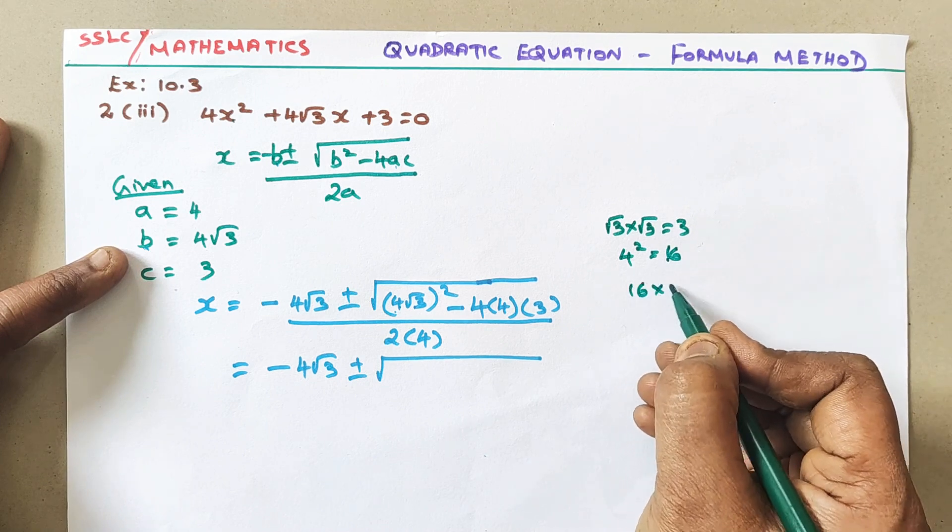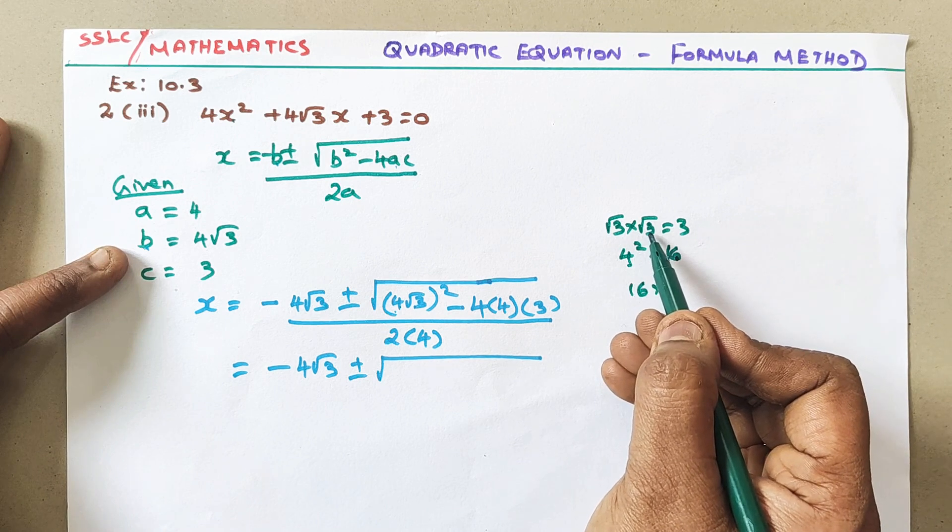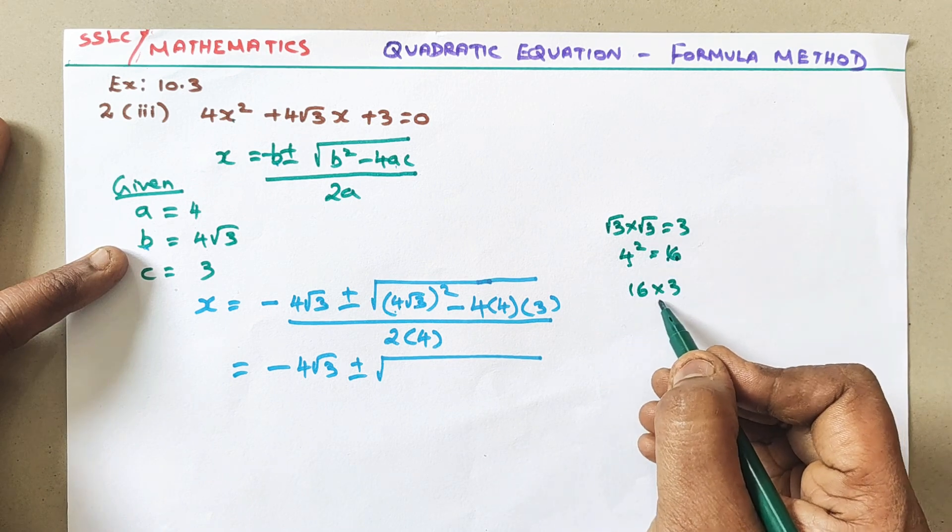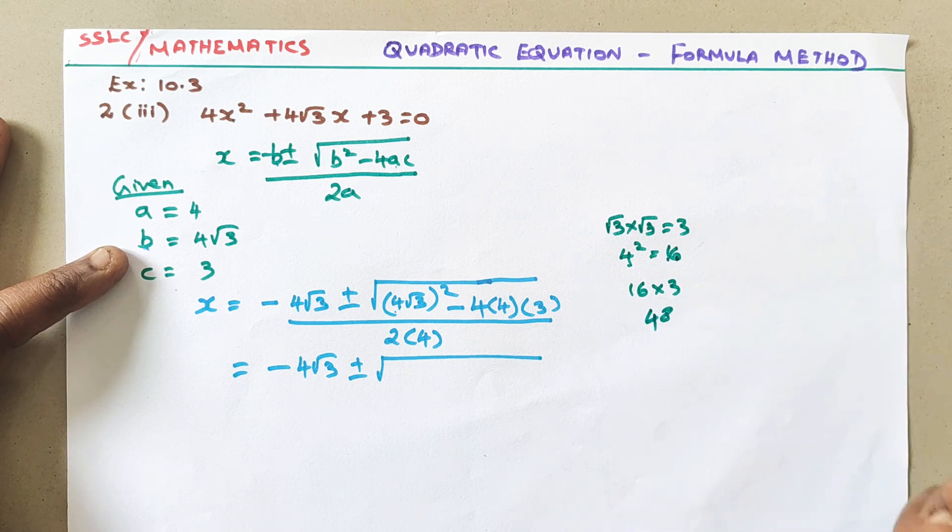4² is 16. So 16 × 3. That is we should multiply 16 × 3. That means 4² value and this √3 square we should multiply. So 16 × 3... 48. So here 48.